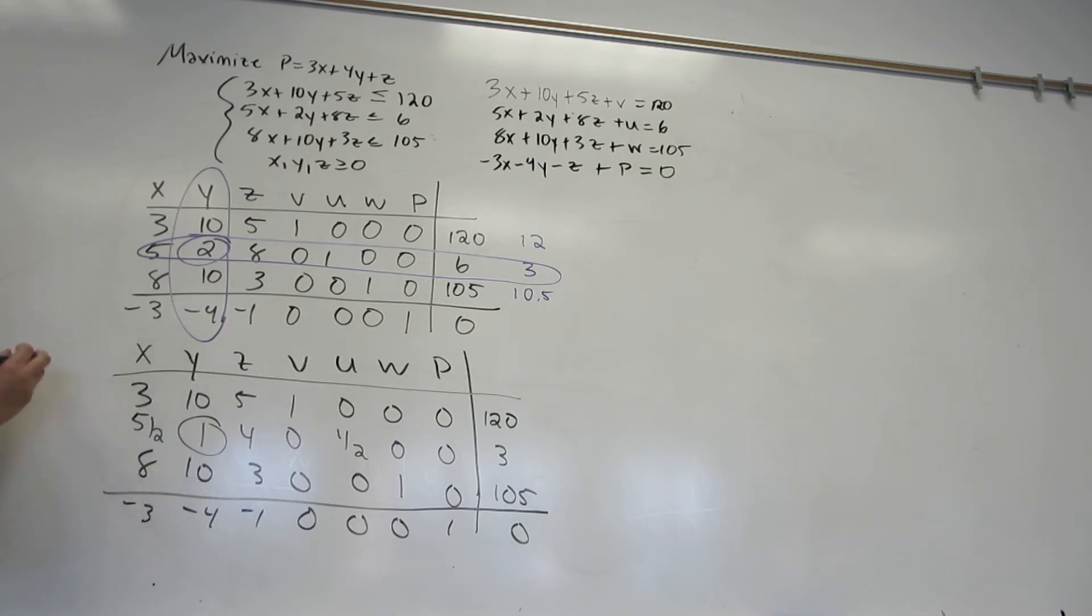So for the first row, I'm going to do R1 minus 10R2. For the third row, I'll do R3 minus 10R2. And for the fourth row, I'll do R4 plus 4R2.